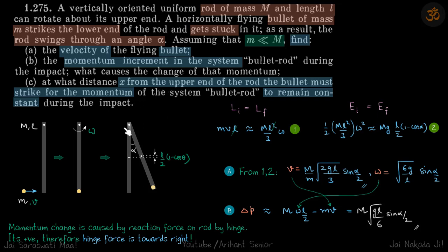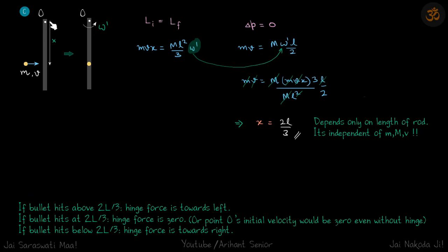Now let's see the part C: at what distance x from the top the bullet must strike such that the momentum remains constant? So let's say that happens when it strikes a distance x. Now we are assuming that the momentum on these two systems is the same. So initial momentum is mv, and final momentum is of course m times v_cm, that is ω'l/2. So this equation: mv equals mω'l/2.